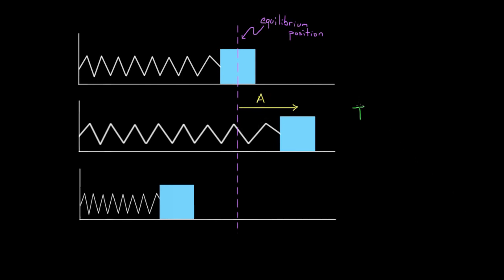But it's a little less obvious in terms of the period. What does the period depend on? Who or what determines the period? Maybe it depends on the amplitude — so let's just check. If I pulled this back farther, if I increase the amplitude, will that change the period of this motion? Let's think about it.